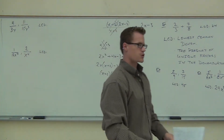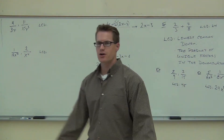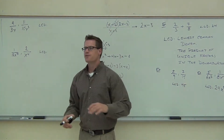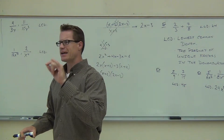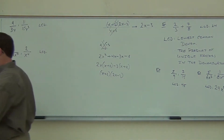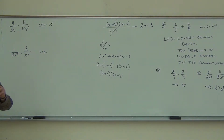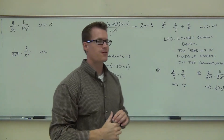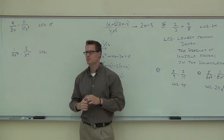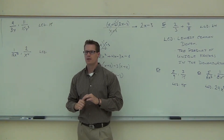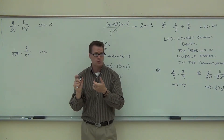On the first one, we have denominators of 3y and 15y to the third. The numerators — we don't care. We're just looking for LCD. First, find the LCD of just the numbers. The LCD of 3 and 15 is 15, since three already goes into fifteen. Now think carefully about the variables — we only have one unique type of factor: y's.